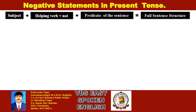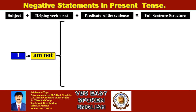In this class, the predicate of the sentence follows the subject and helping verb. For negative statements: 'I am NOT' is helping verb plus NOT plus predicate of the sentence. For example: I am NOT your mother.